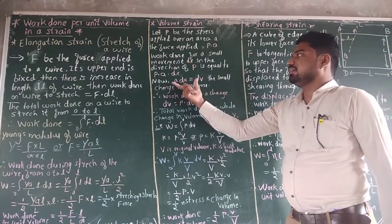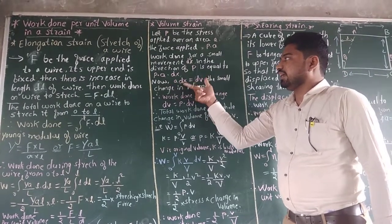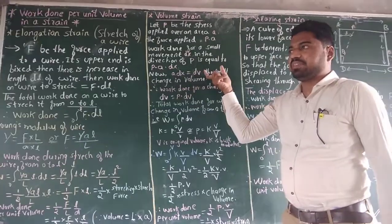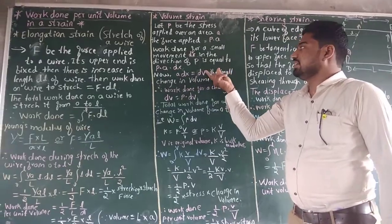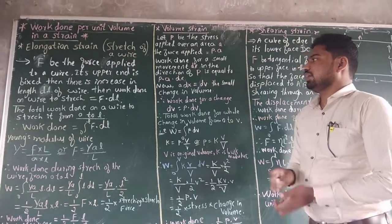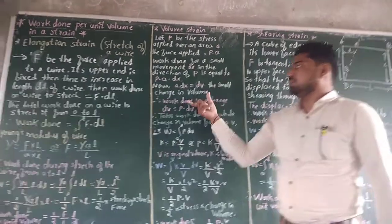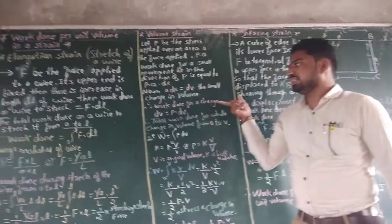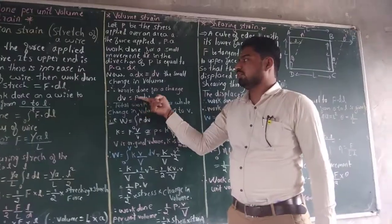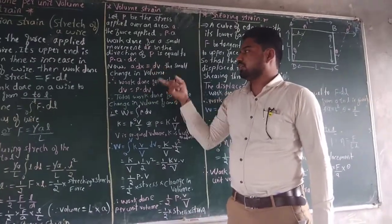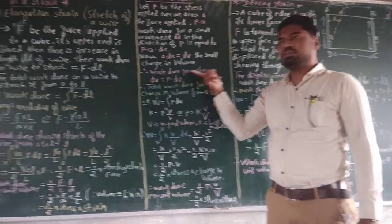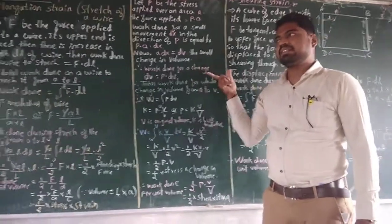Now, A into Dx equals dV, that is the change in volume. Therefore, work done for a small change dV equals P into dV. This is the expression for work done for a small volume change.